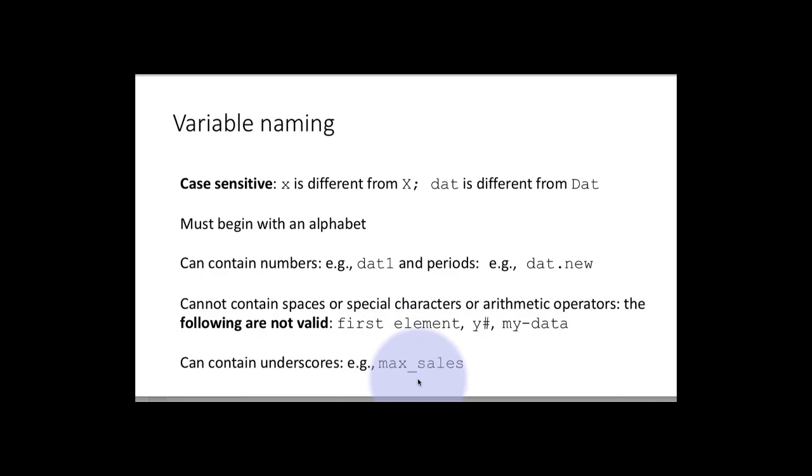Variable names can contain underscores. So for example, max_sales is an acceptable variable name. In fact, most of the time we will try to follow this convention for when our variable name has multiple words.